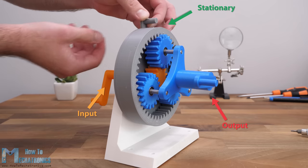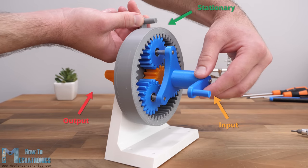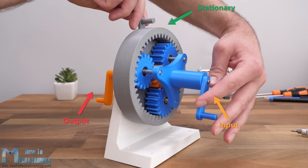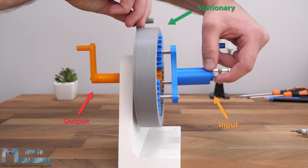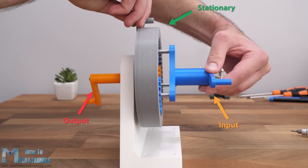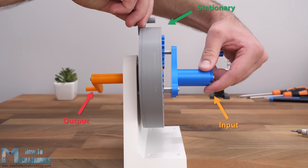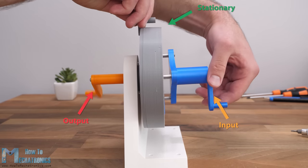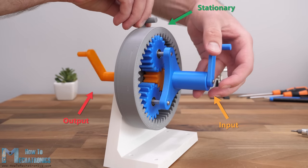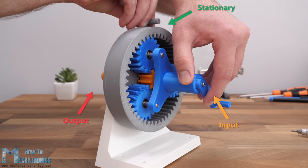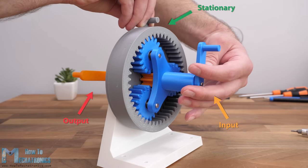We can also use it the other way around or use the planet carrier as an input, then the sun gear will rotate 5 times faster. But that's not all. The beauty of the planetary gearing system is that we can get various outputs or transmission ratios depending on which component is held stationary and which component is the input.